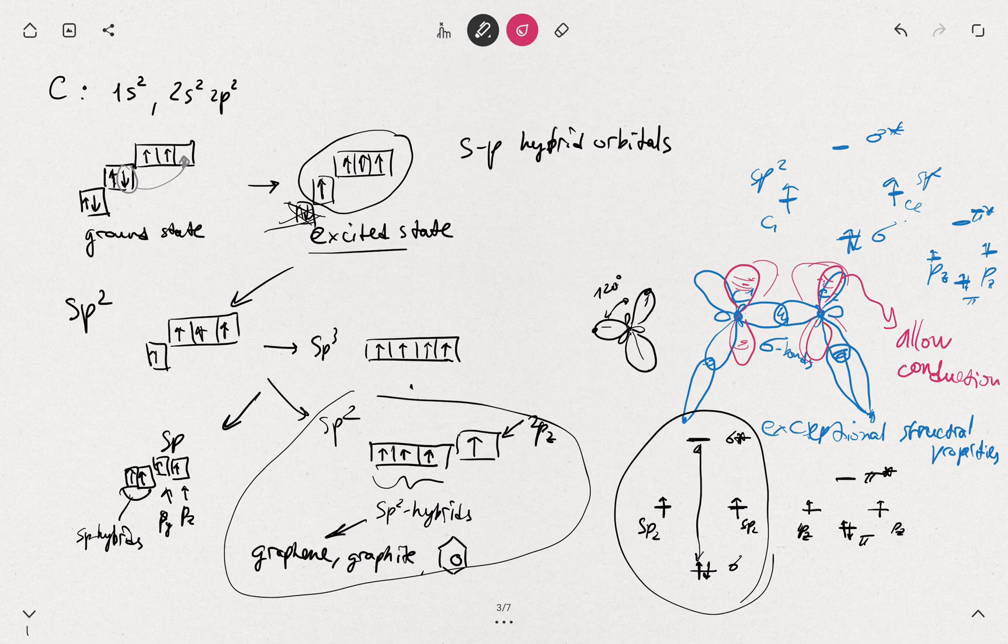So each of those carbon atoms, they contribute one electron. And this means the pi orbitals will be half - all these bands formed by the pi orbitals, they will be half filled.